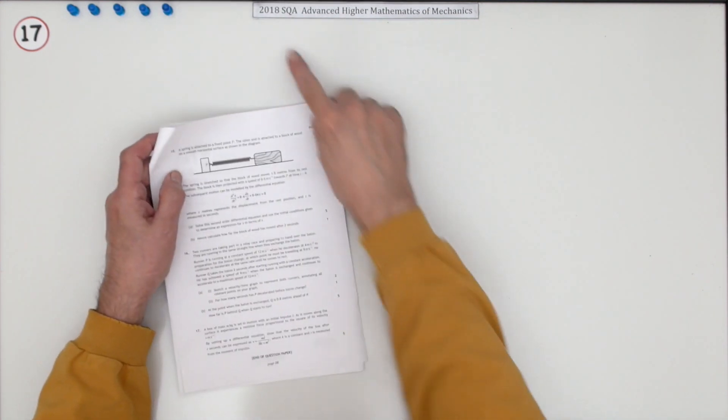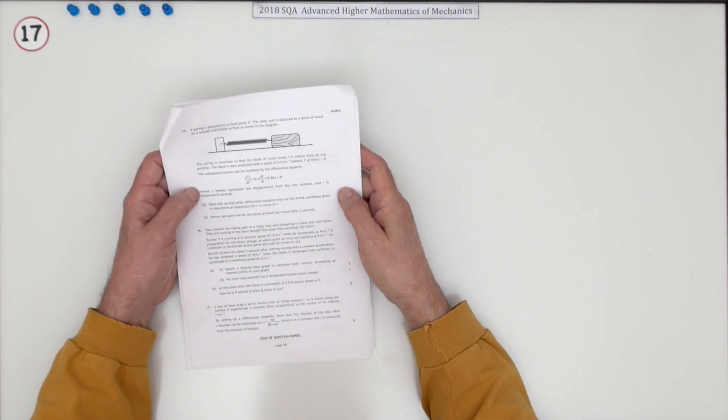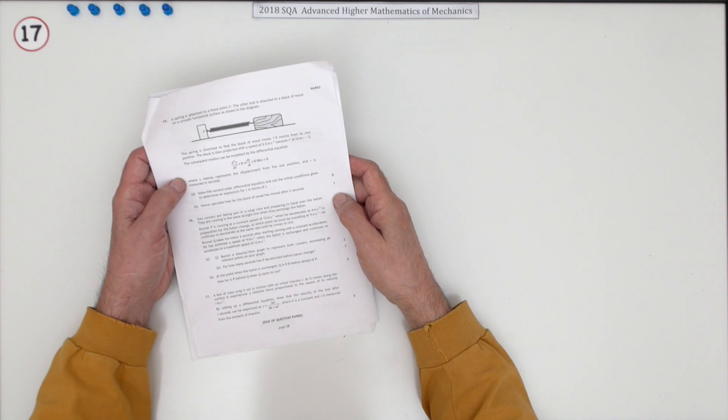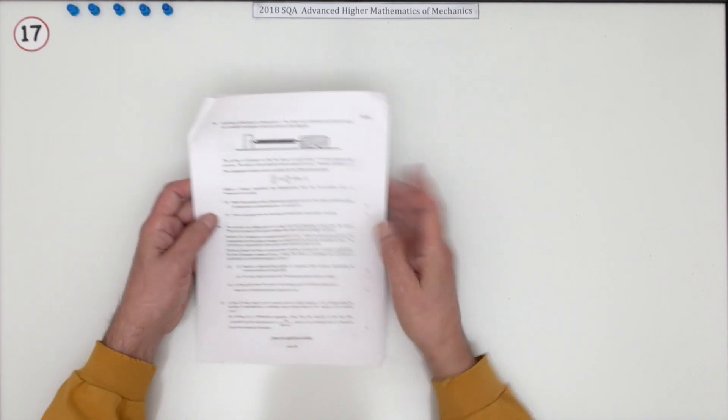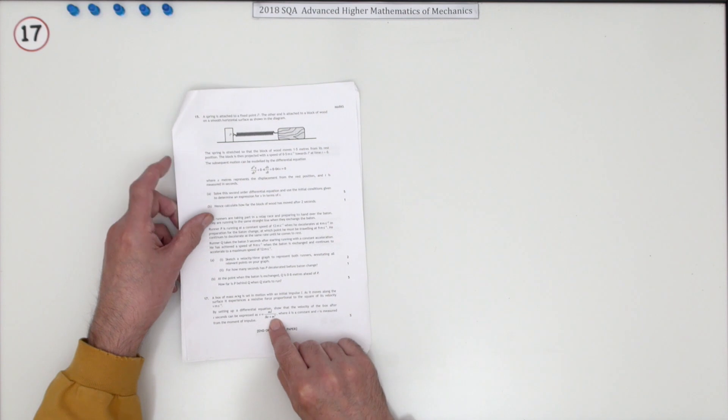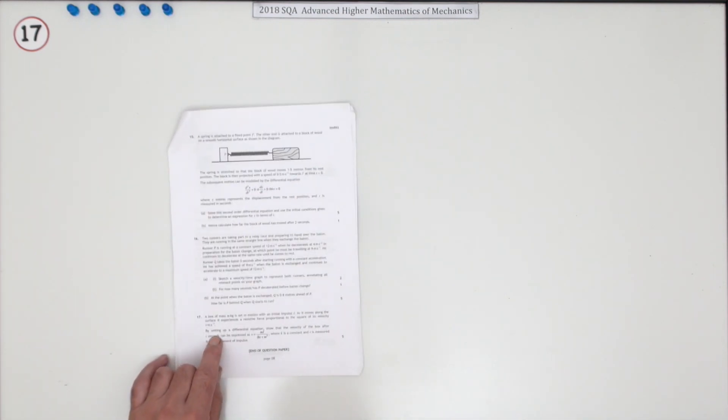So number 17 then, the last question in the 2018 SQA Advanced Higher Mathematics of Mechanics. Five marks here for deriving an expression for the velocity of this situation here.